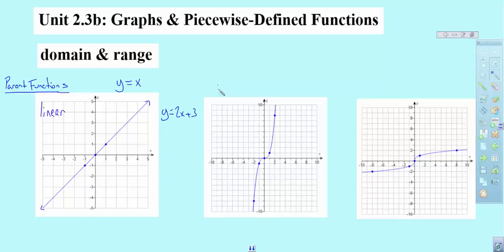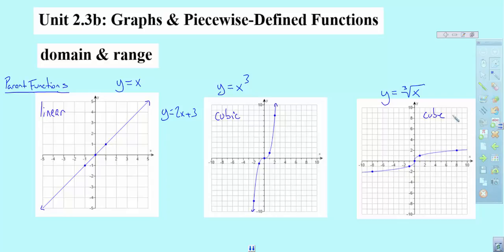Next one is y equals x cubed. We call this a cubic function. Remember those arrows are on there — they go on forever. These two are inverses of each other, and this is called a cube root — y equals the cubed root of x. There's no special name beyond cube root. The names aren't that important; it's just vocabulary.